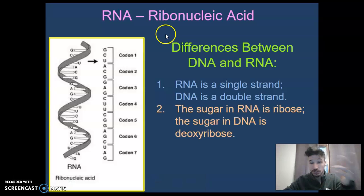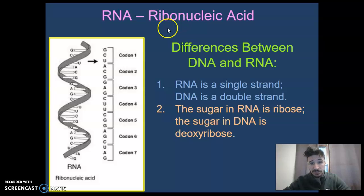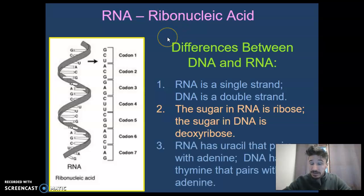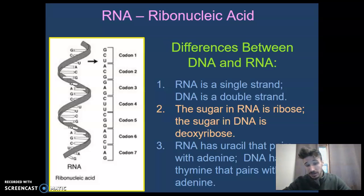The sugar in RNA is ribose, and the sugar in DNA is deoxyribose — hence where they get their namesakes from. RNA has uracil that pairs with adenine, so in RNA, U pairs with A. DNA has thymine, which pairs with adenine, so in DNA, T pairs with A.